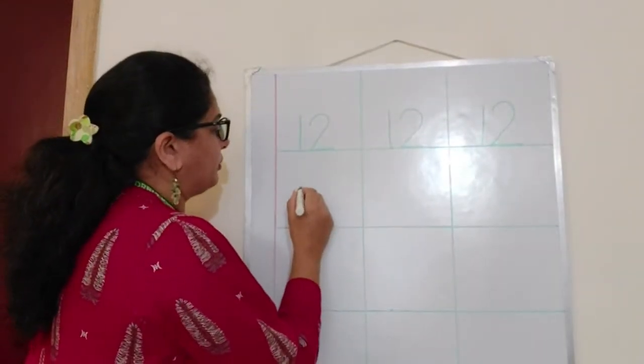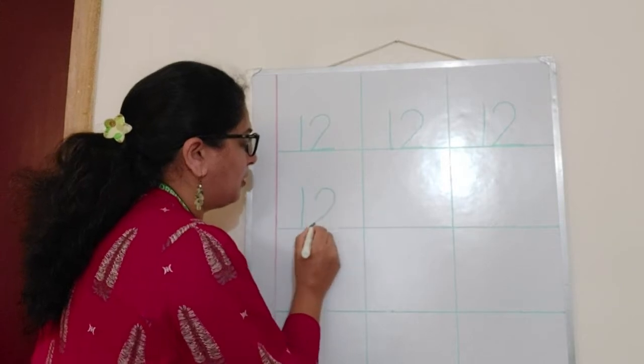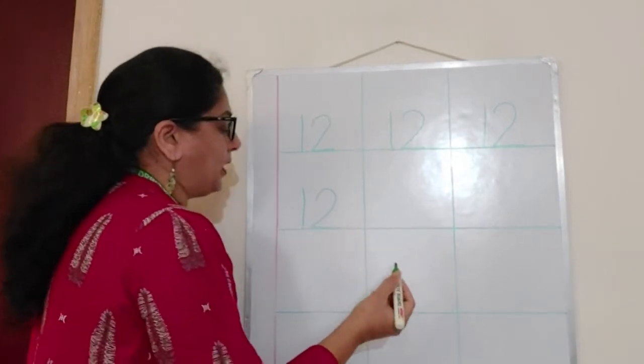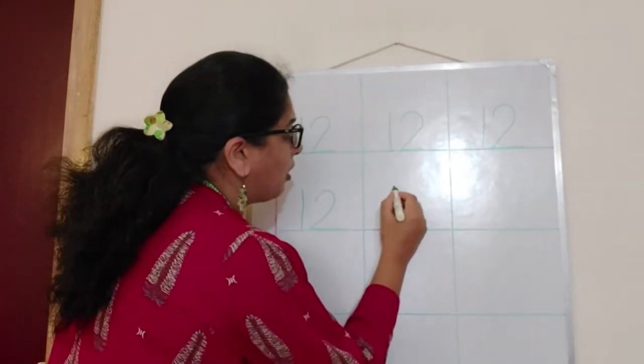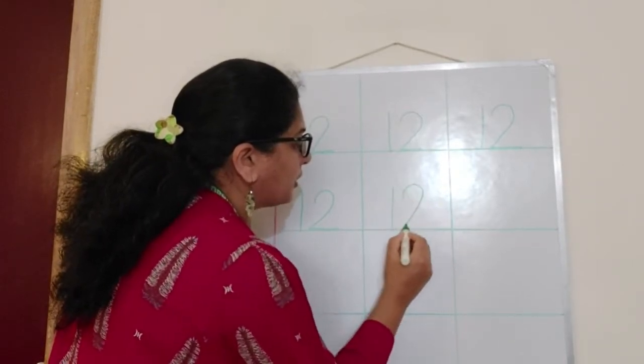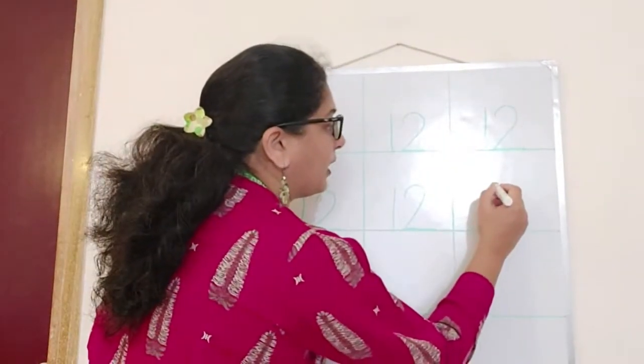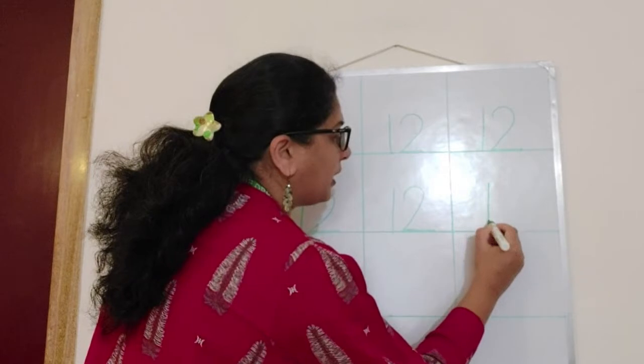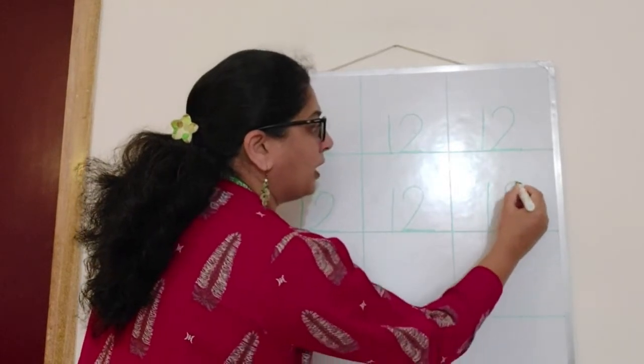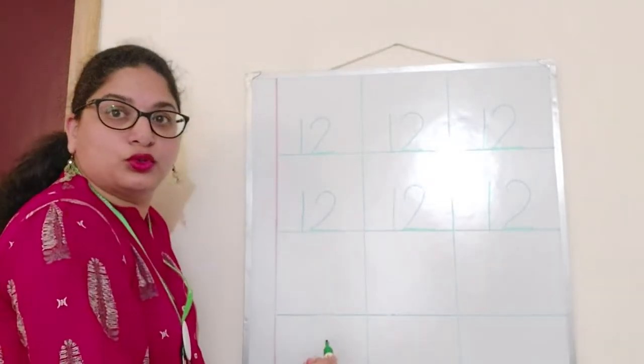Now again one more time. 1, 2, 12. Children, see all my numbers are touching the bottom line. All the numbers are touching the bottom line. 1, 2, 12. One more time. 1, 2, 12.